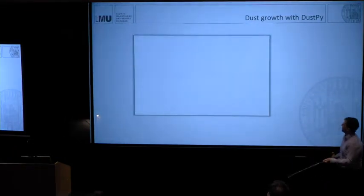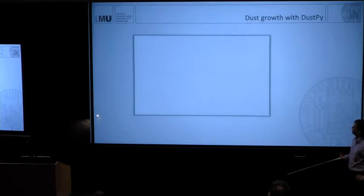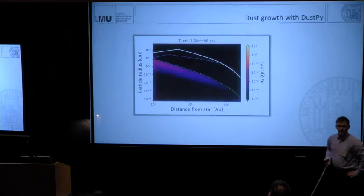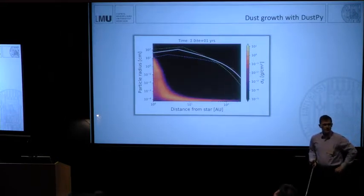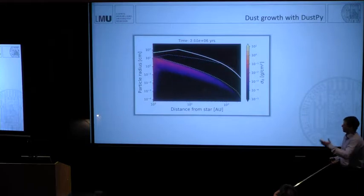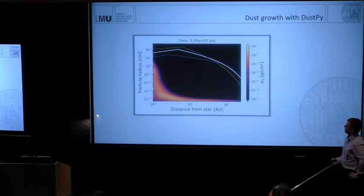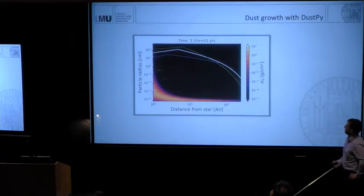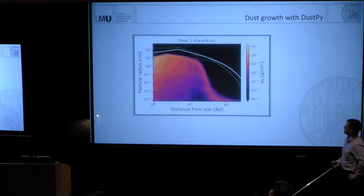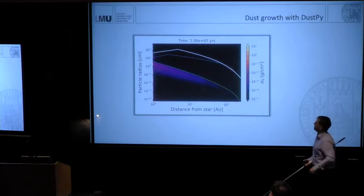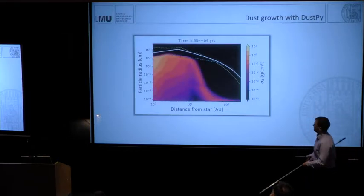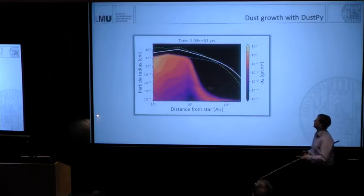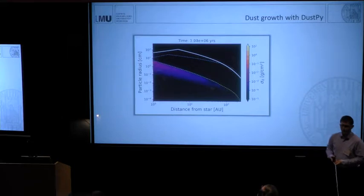You see growth starts in the inner disk because the densities are higher, the time scales are just shorter. And you have an inside-out growth. As soon as the particles reach the fragmentation limit, the smaller particles are replenished. And when the dust gets accreted, the drift limit comes down and you only have the particles close to the drift limit and no small particles.